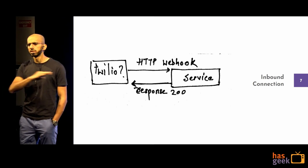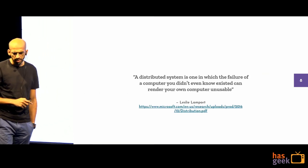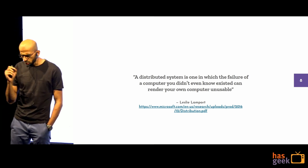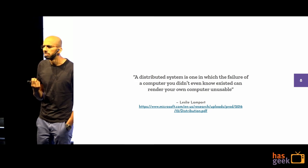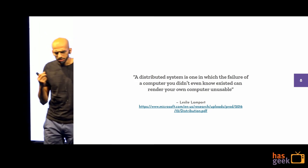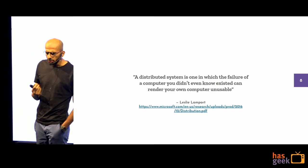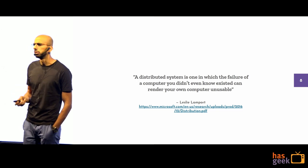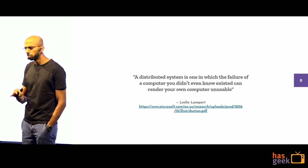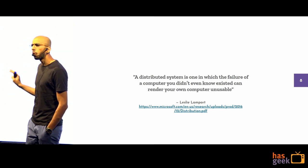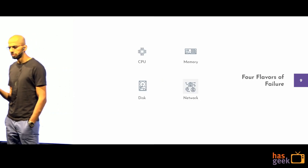Leslie Lamport's classic definition: a distributed system is one in which the failure of a computer you didn't even know existed can render your entire system unusable. There are usually four flavors of failure to consider.